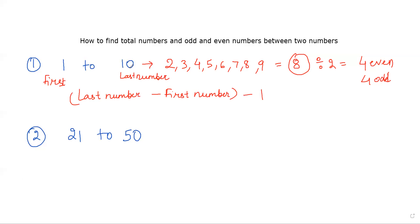Going by this formula, if the last number is 10 and the first number is 1, then 10 minus 1 minus 1: 10 minus 1 is 9, and 9 minus 1 is 8. So the total numbers between 1 and 10 is 8.